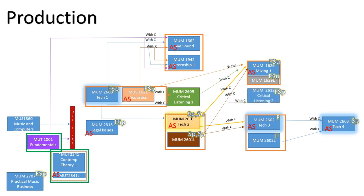Production Subplan students take a Mixing 1 class, which also has a lab. They also take a second course of Critical Listening called Critical Listening 2. Production Subplan students take an Internship 2 course, which is usually an external internship with either a professional recording studio, radio station, a live sound company, or another experience in the professional music industry. Internship 2 is usually done towards the end of your time in the program.